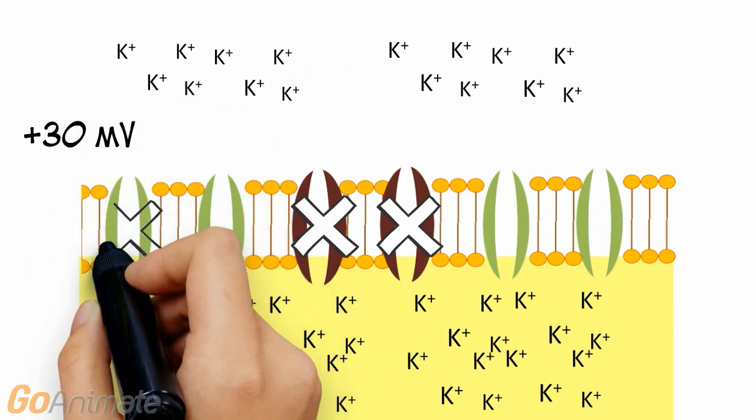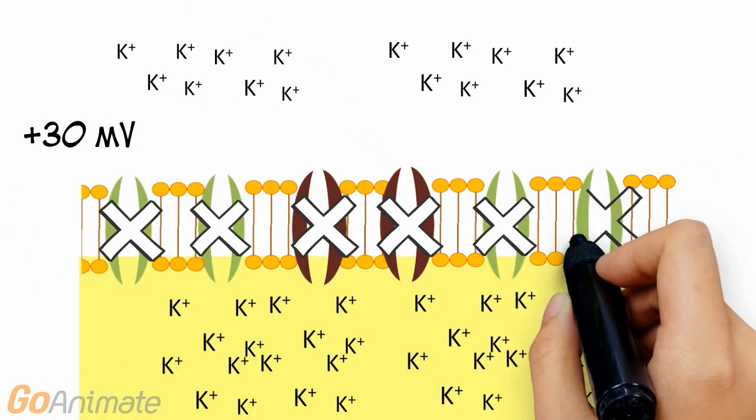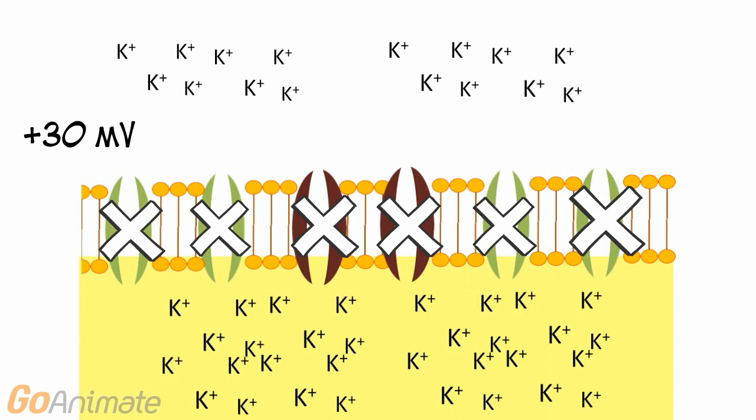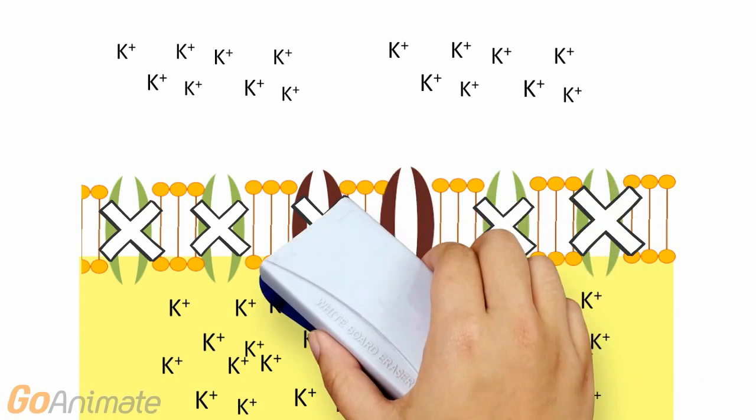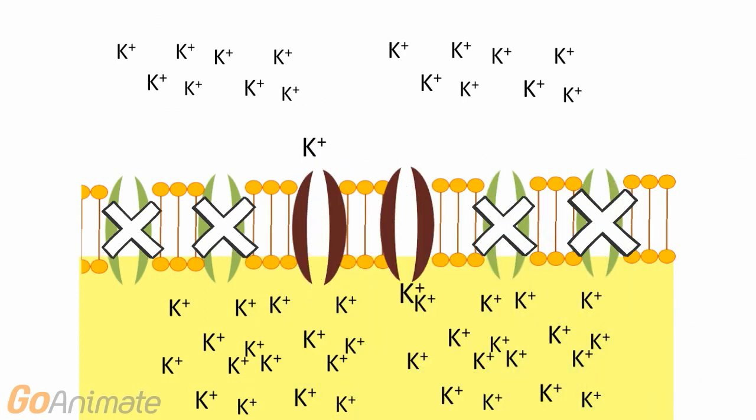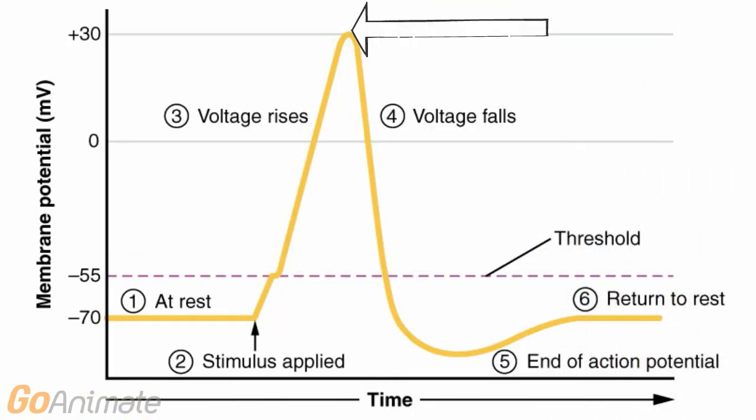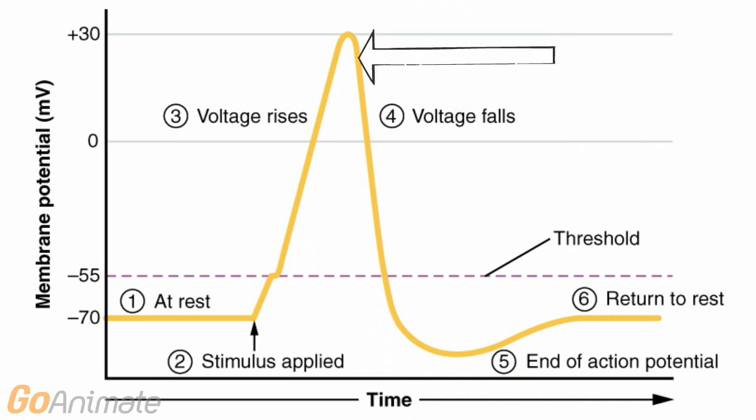At positive 30 millivolts, the sodium channels close. Voltage-gated potassium channels now open, allowing potassium to move out of the cell. The membrane voltage returns to the resting membrane potential of negative 70 millivolts.